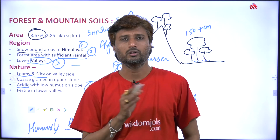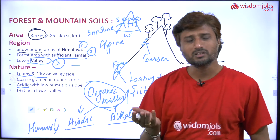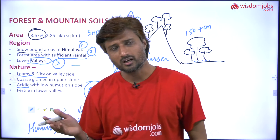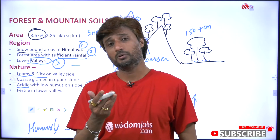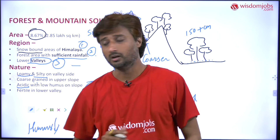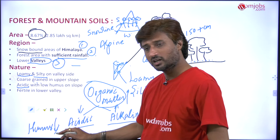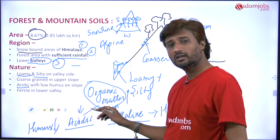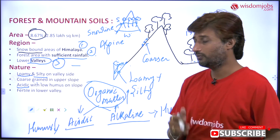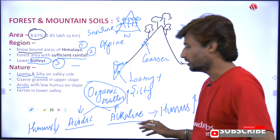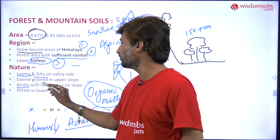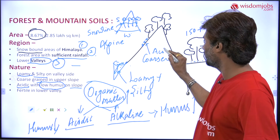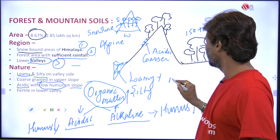Students generally think it is only about pH — that is the chemistry angle. For geography, keep in mind: humus content less means acidic, humus content more means alkaline. The pH scale will show less than seven for acidic and more than seven for alkaline. The best soil for crops has a pH of 6.5 to 7.5. On the slope side it is acidic due to low humus, while on the valley side it is alkaline.